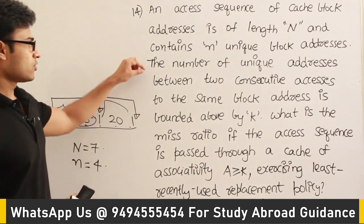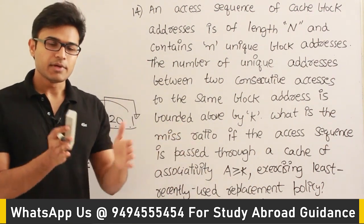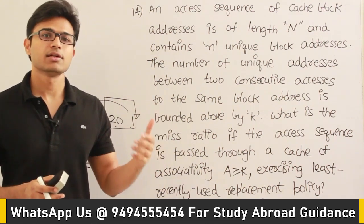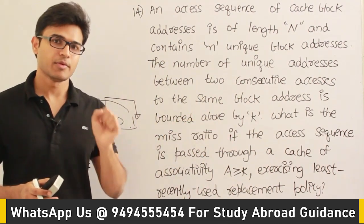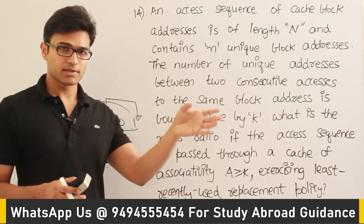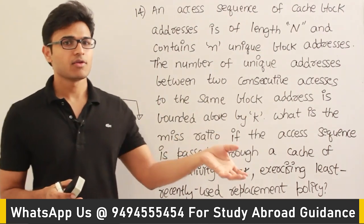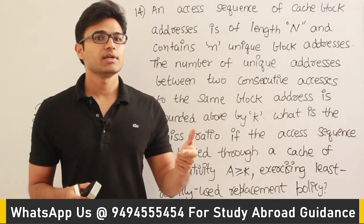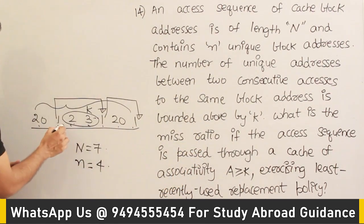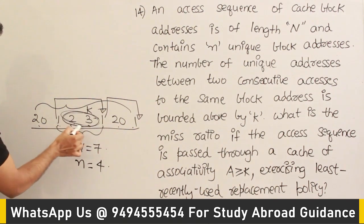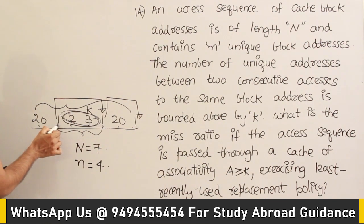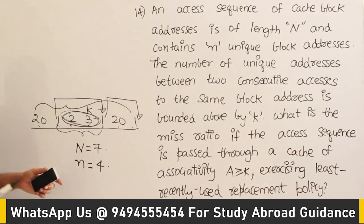In the example, k is bounded by 2. When any block is referred twice, between those two references there can be references to k distinct blocks. All those k distinct blocks may need to be brought into the cache. If the cache doesn't have sufficient space, you might have to replace an existing block to satisfy those references.